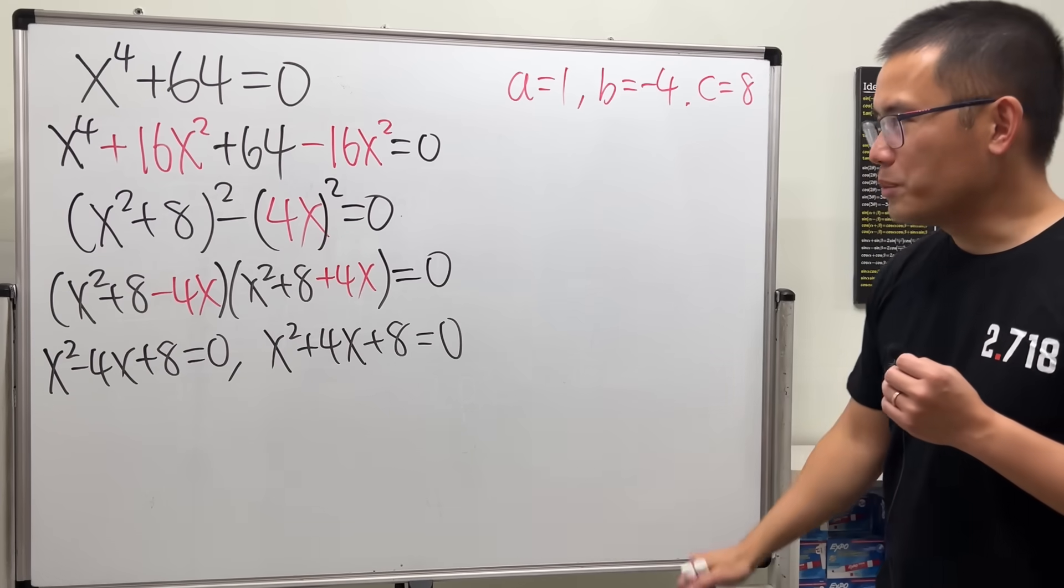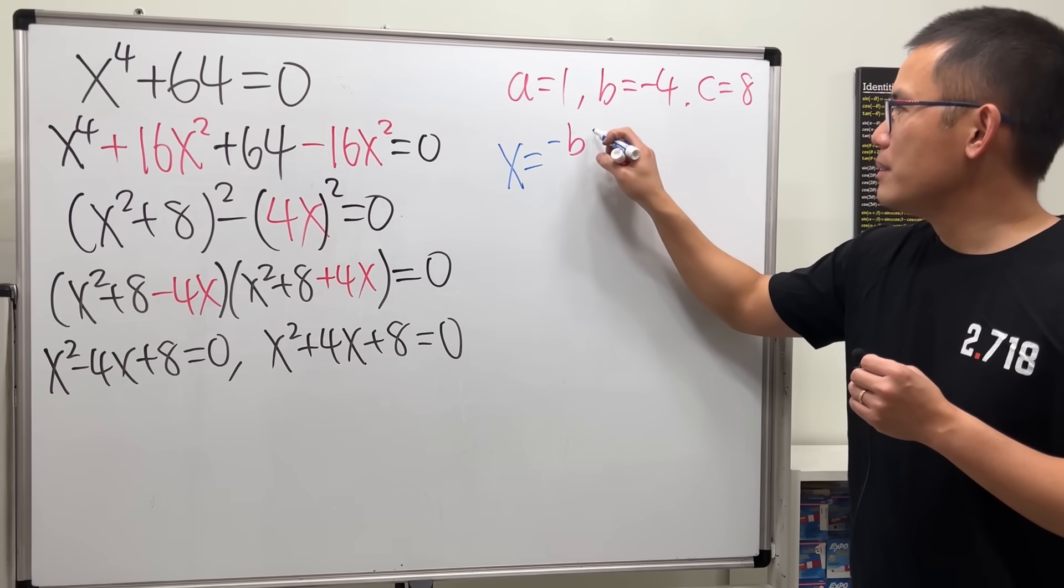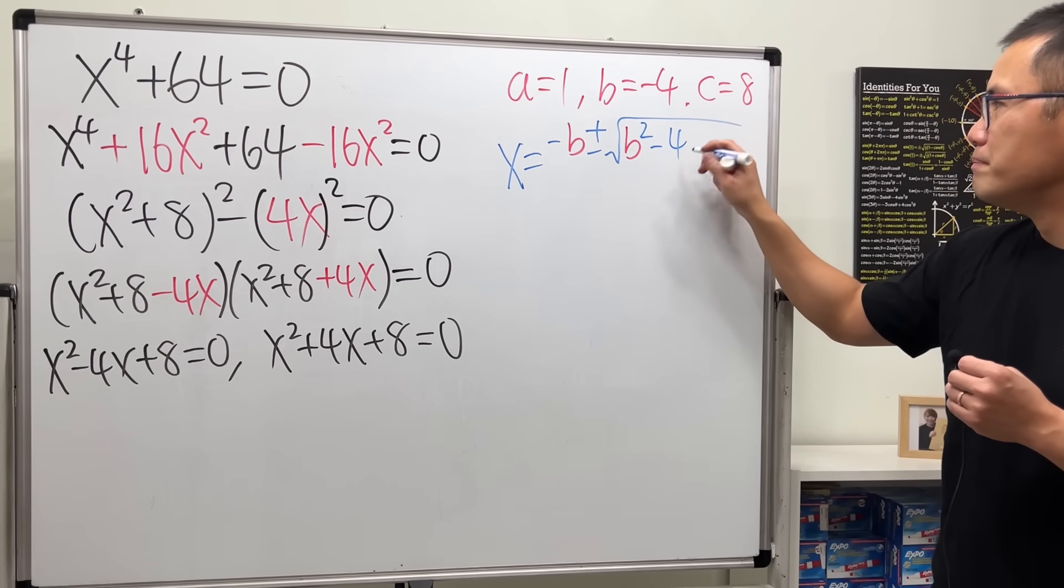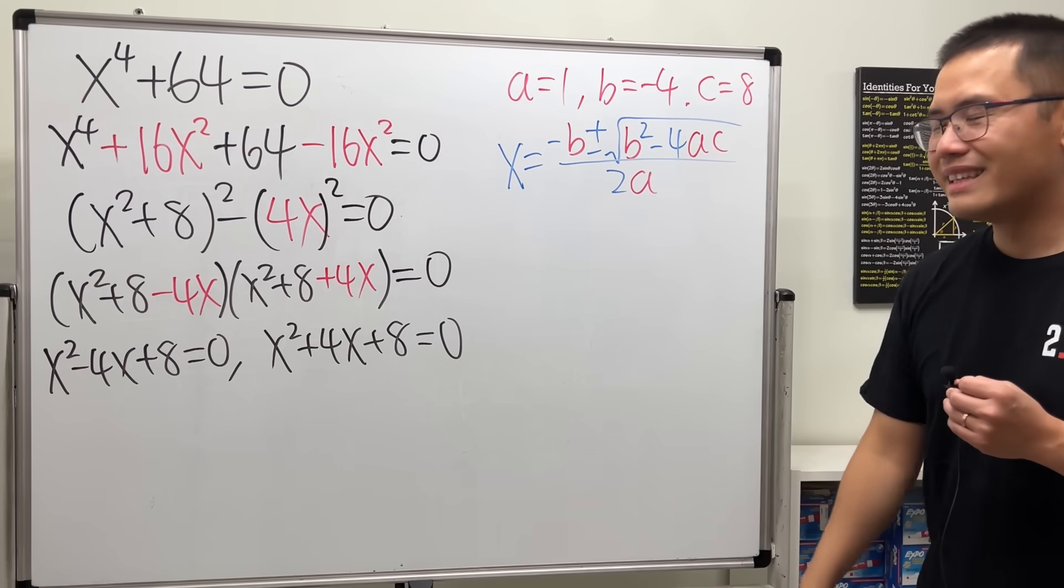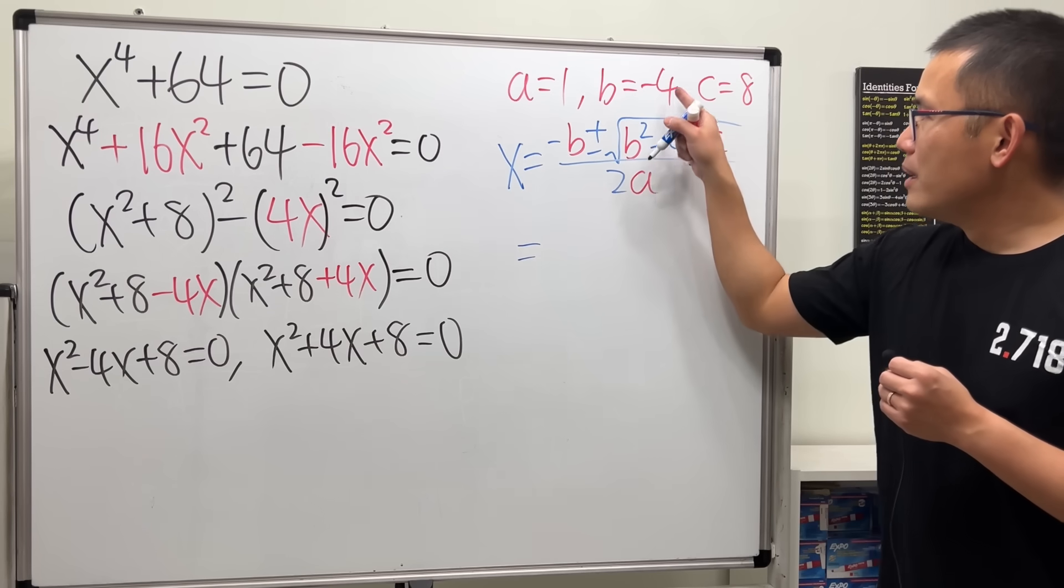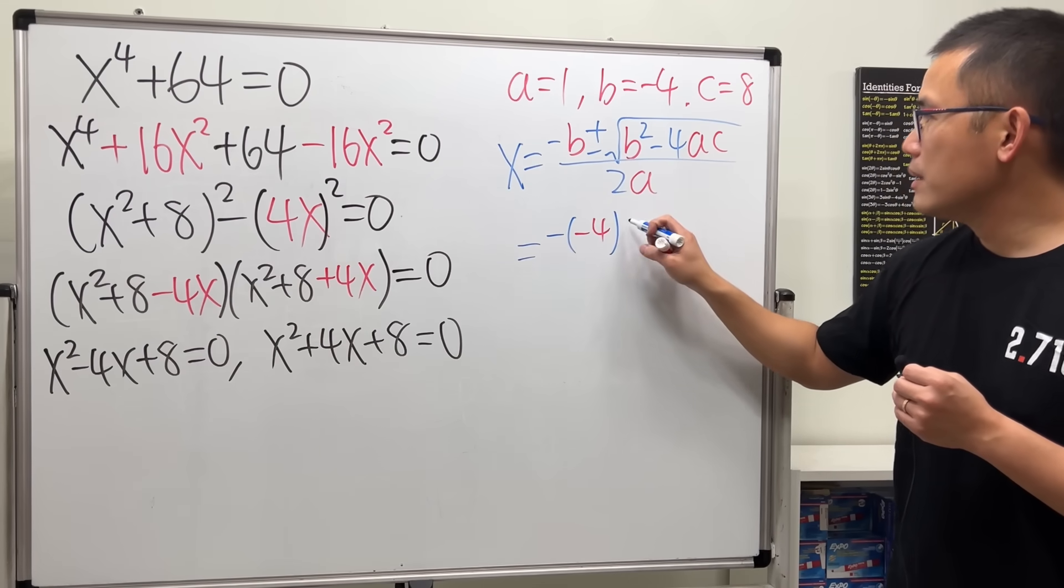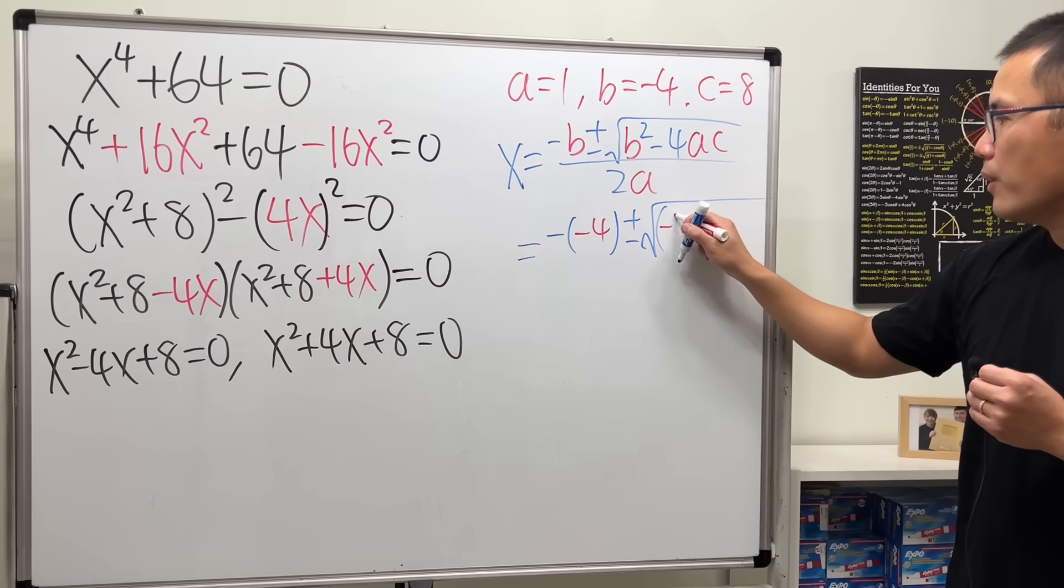And let me review the quadratic formula with you guys real quick. x is equal to negative b plus or minus square root of b squared minus 4ac all over 2a. So, plug in negative 4, so we have negative, negative 4, plus or minus square root of b is negative 4, square that.